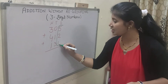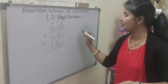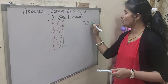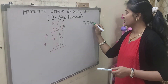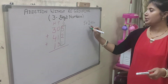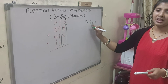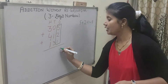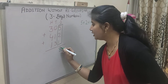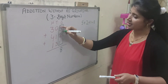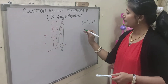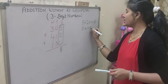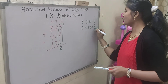Add these digits first. That is 5 plus 2 plus 1: 5 plus 2 is 7, and 7 plus 1 is 8. So we get 8 here. Now at the 10s place digit we have 0 plus 1 plus 3. What do we get? 4.